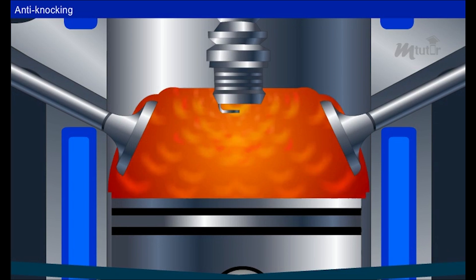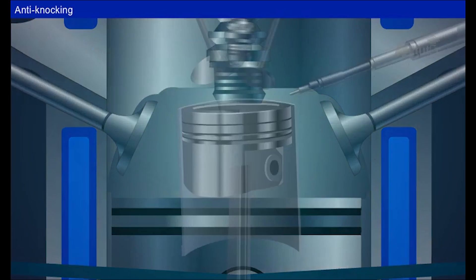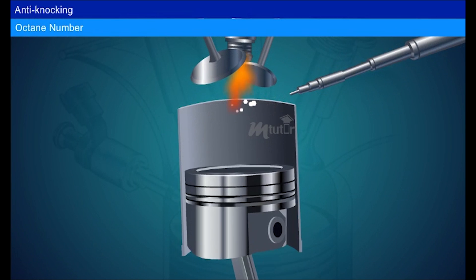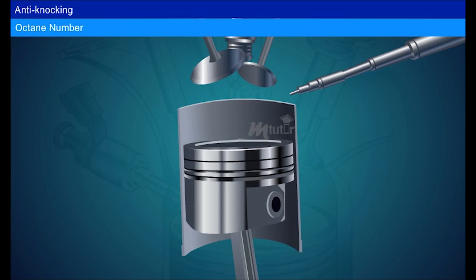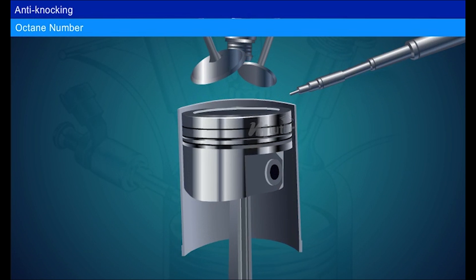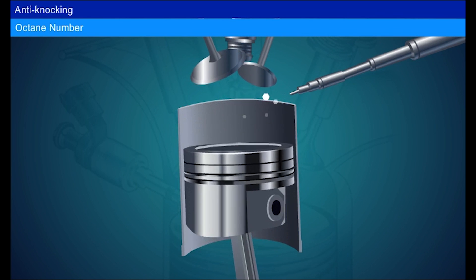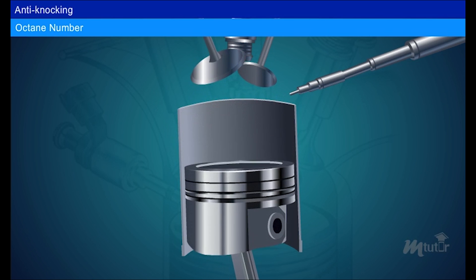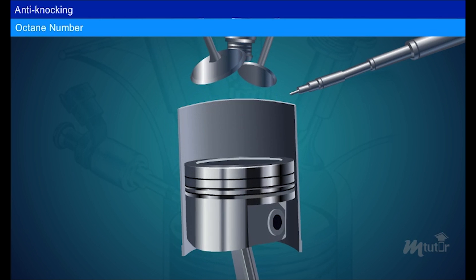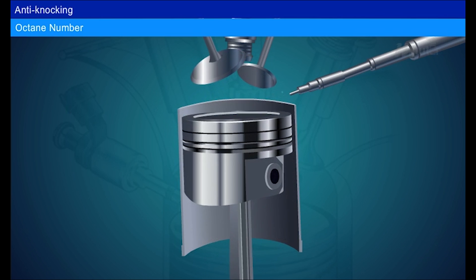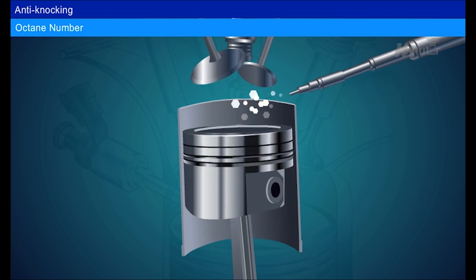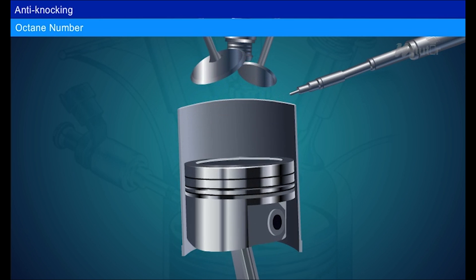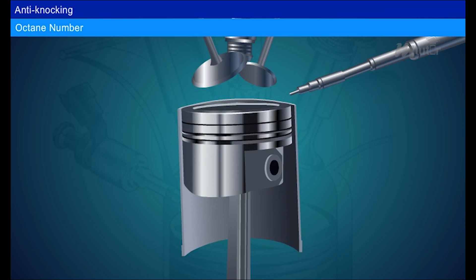The combustion is more uniform and there is no knock. The performance of gasoline in an internal combustion engine is rated based on octane number. The high anti-knock reference fuel is known as iso-octane, and hence the expression 'octane number.' Lower the octane number of the gasoline, lower its performance. Higher the octane number of fuel, higher the performance of the engine.